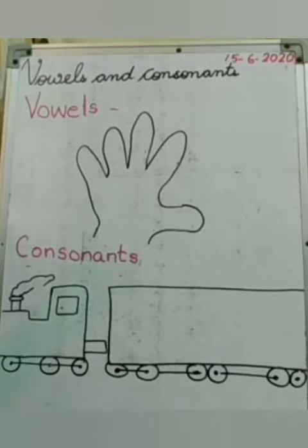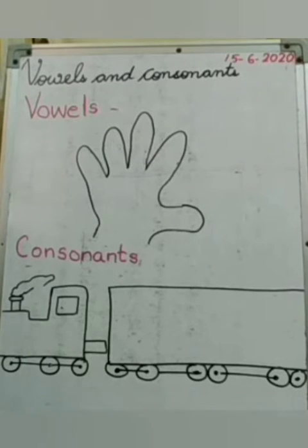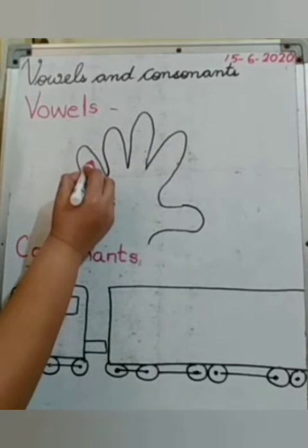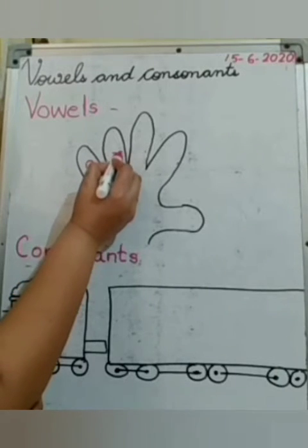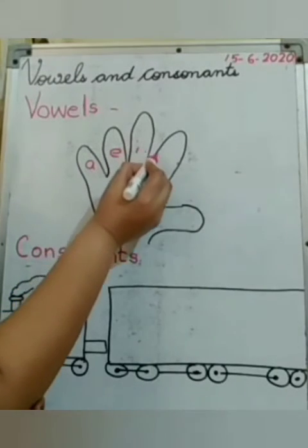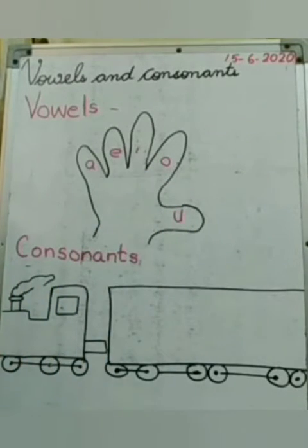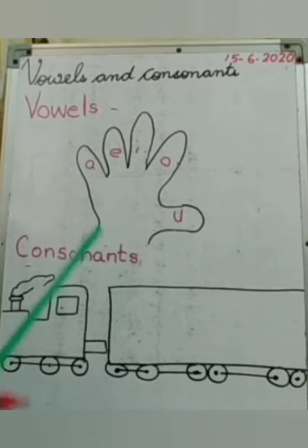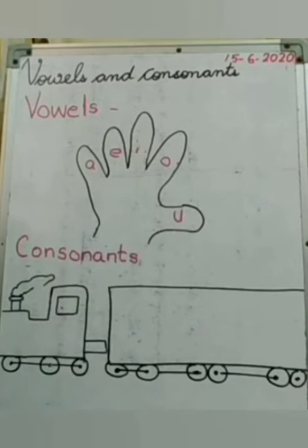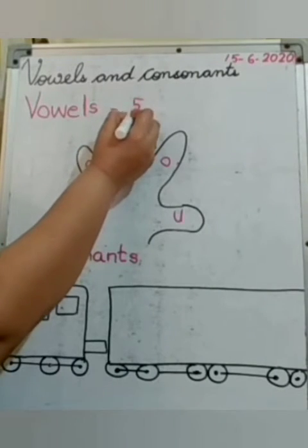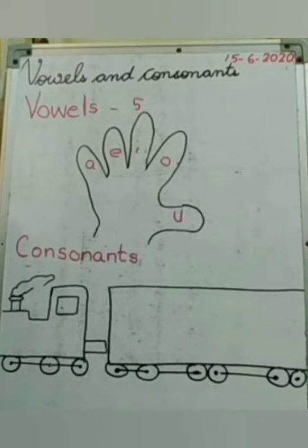So, first we will do vowels. What are vowels? Do you remember how many vowels there are and what are they? A, E, I, O, and U. So, A, E, I, O, U are vowels. How many? 1, 2, 3, 4, 5. Vowels are 5.